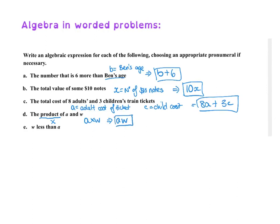Okay, when we see this last one, W less than A. So that means we had A and we take W, we have W less. So you've got to be really careful with them, the takeaway ones, because they can be, if you misinterpret, you'll get the wrong answer.